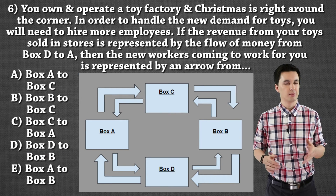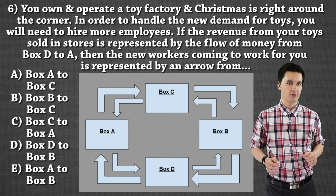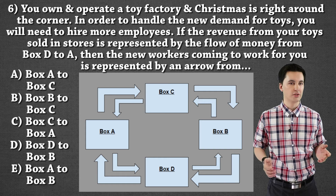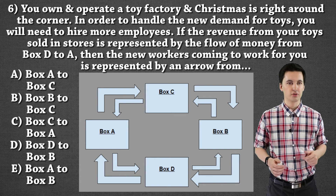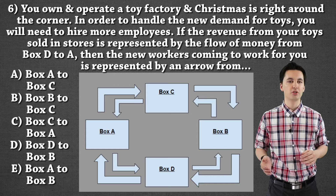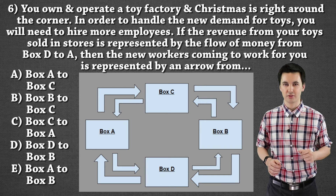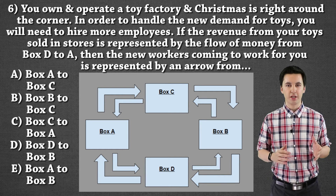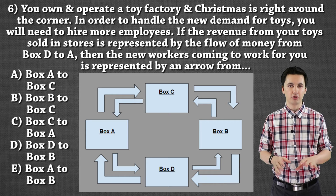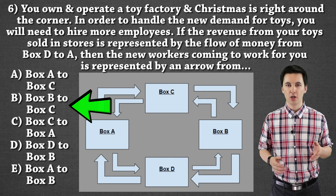Question number six is a little bit more complicated, but we'll be able to figure it out. You own and operate a toy factory and Christmas is right around the corner. In order to handle the new demand for toys, you will need to hire more employees. If the revenue from your toys sold in stores is represented by the flow of money from box D to A, then the new workers coming to work for you is represented by an arrow from where? If you said from box B to C, you are correct.